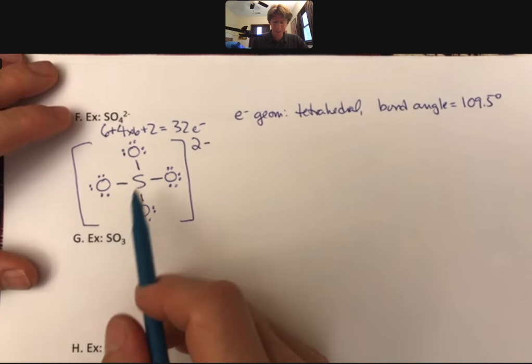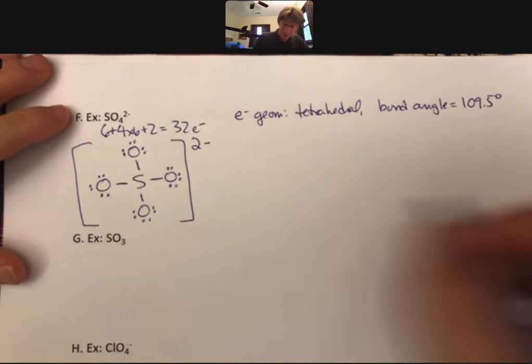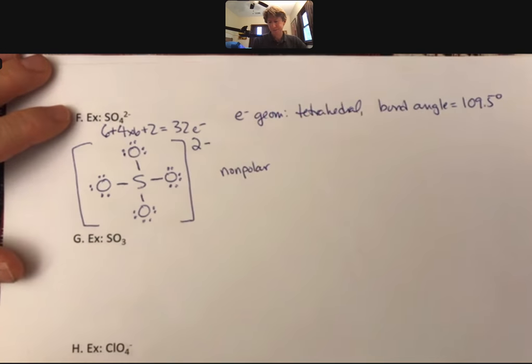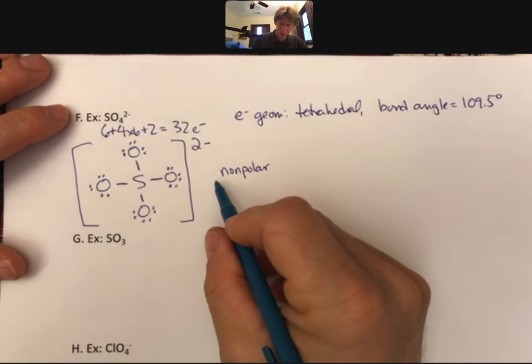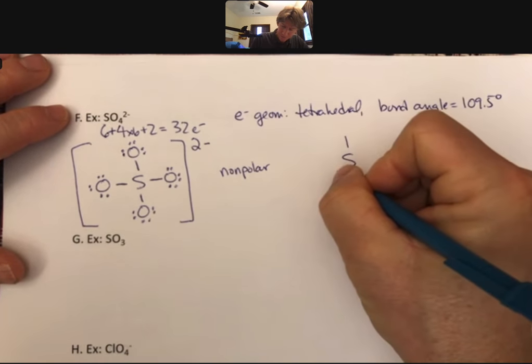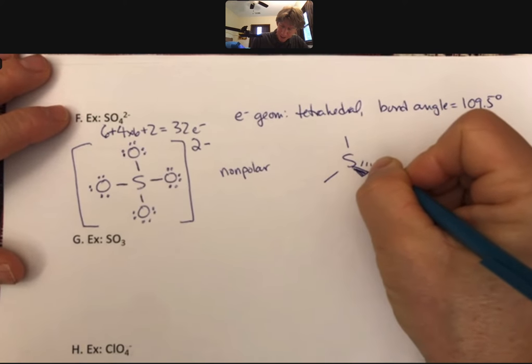And at this point, we could say, well, sulfur has all things that are exactly the same around it. That's our first guiding principle. This must be nonpolar. Although, when we get to what's coming up, even though this is nonpolar, but let's do it. So sulfur, three different ones going down.